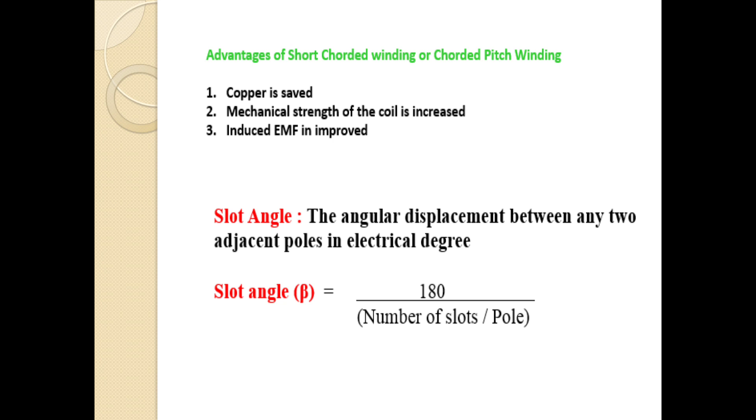The slot angle formula is: slot angle = 180 degrees divided by the number of slots per pole.